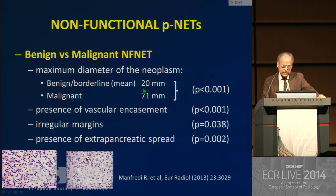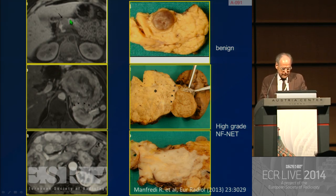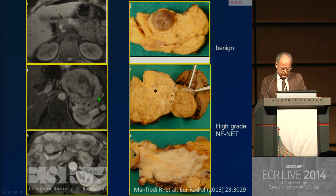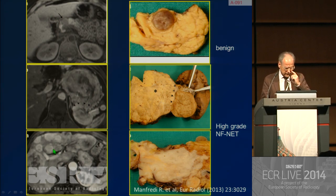Other characteristics predicting malignancy include the presence of vascular encasement, irregular margin, and extra-pancreatic spread. A typical small lesion with sharply demarcated margin was a benign neuroendocrine tumor, while examples showing invasion of surrounding organs — in this case the kidney — a large neuroendocrine tumor with extra-pancreatic spread and multiple liver metastases were high-grade non-functional neuroendocrine tumors.